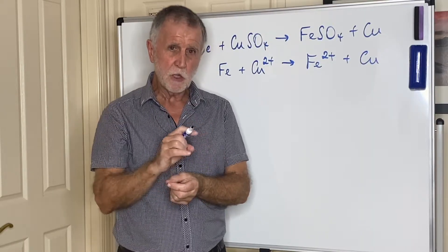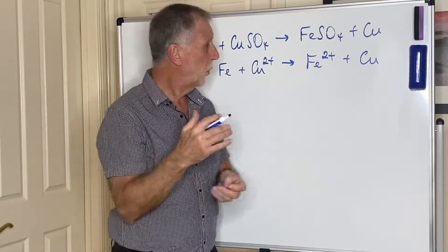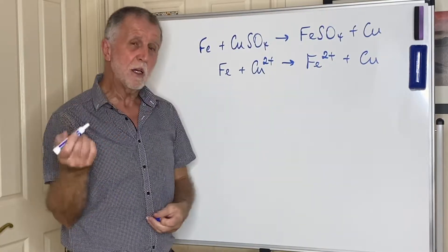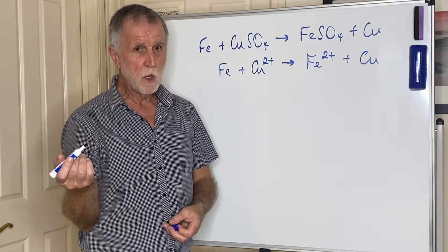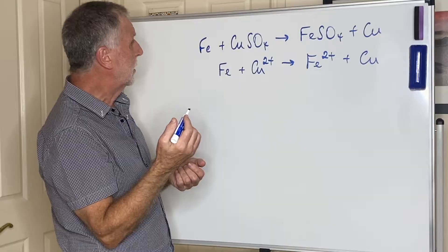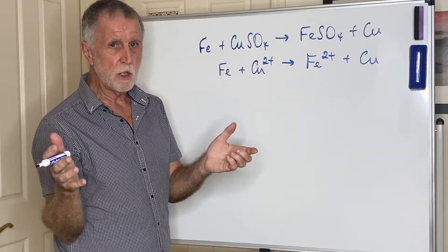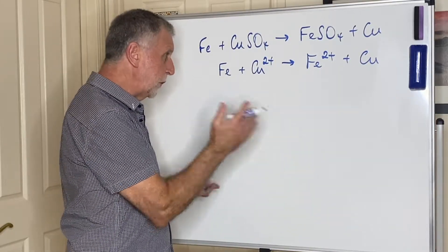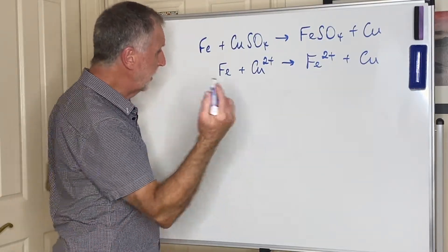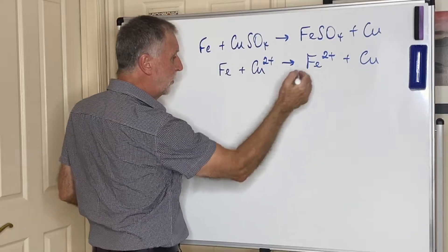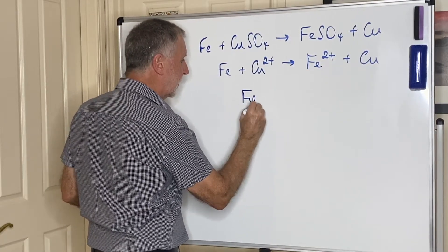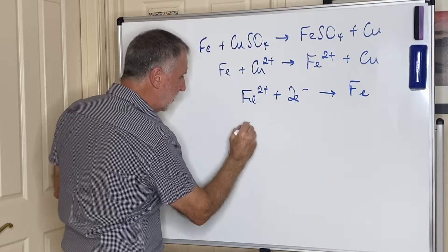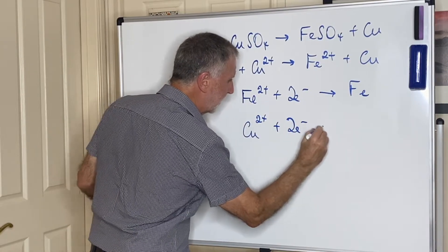It's a table of standard reduction potentials. They're all written as reductions, so if you want an oxidation you simply turn them around. In that table you will see Fe2+ + 2e⁻ → Fe, and further down Cu2+ + 2e⁻ → Cu.